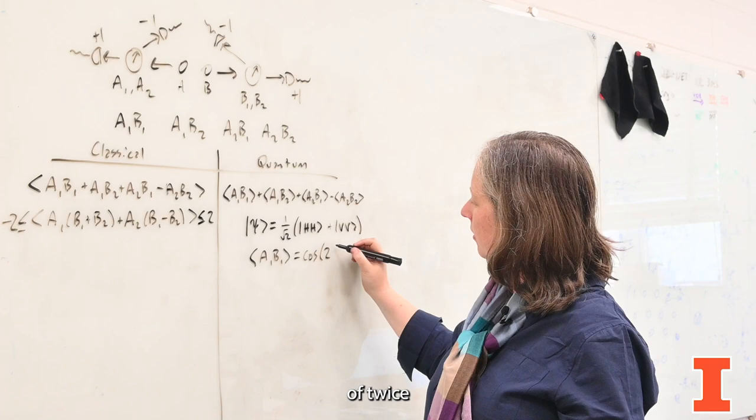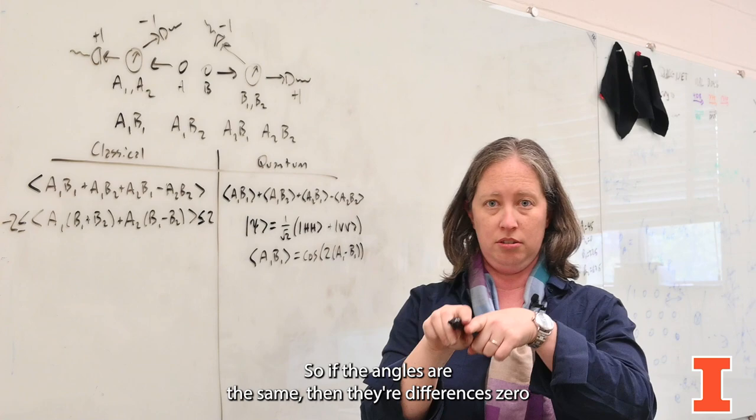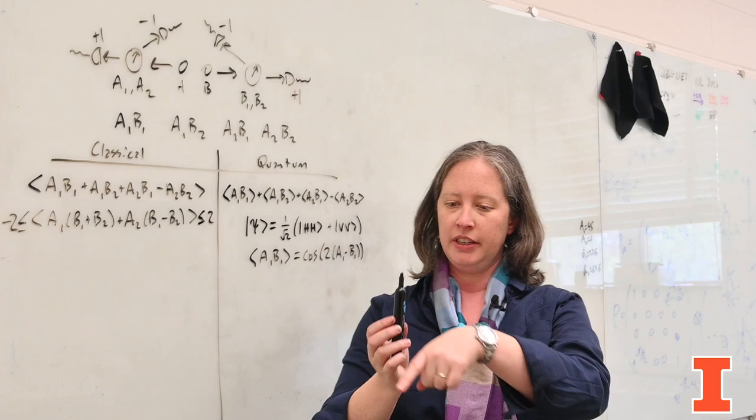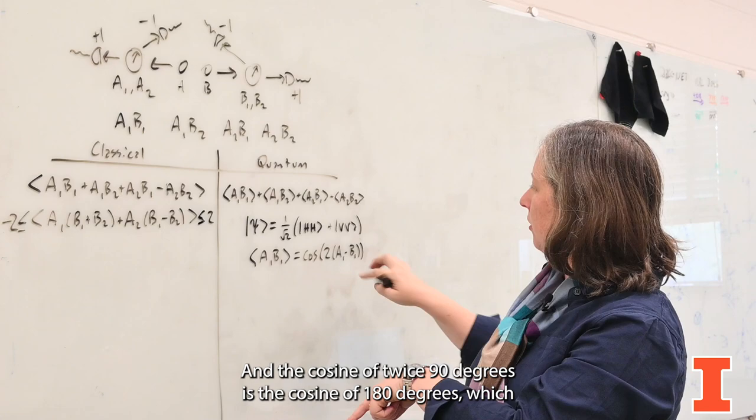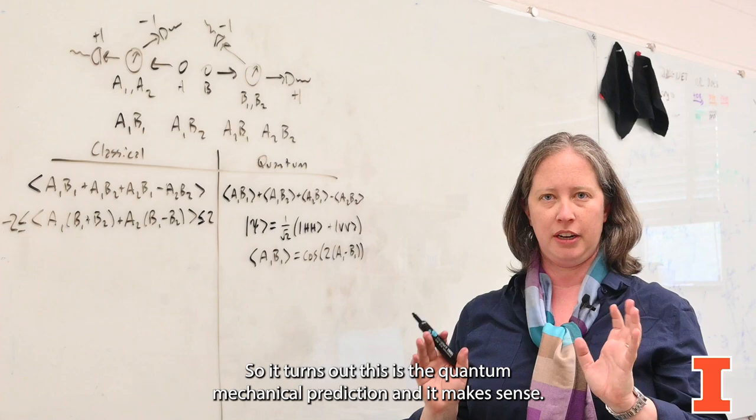quantum mechanics predicts that that's going to be like the cosine of twice the difference between those two angles. So if the angles are the same, then their difference is zero, and the cosine of zero is one. And that makes sense, because if the angles are the same, then I'm going to get the same value on both sides, and so I should get one out for this measurement. If the angle between them is 90 degrees, because I know the polarizations have to be the same, then I'm always going to get different outcomes on either side. The cosine of twice 90 degrees is the cosine of 180 degrees, which is minus one, which is what you expect if the outcomes are always different. So it turns out this is the quantum mechanical prediction, and it makes sense.